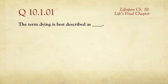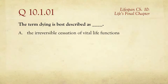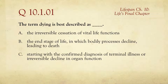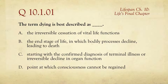The first question in this quiz is: the term 'dying' is best described as what? You get four choices, pick one. The irreversible cessation of vital life functions; the end stage of life in which bodily processes decline leading to death; starting with the confirmed diagnosis of terminal illness or irreversible decline in organ function; or the point at which consciousness cannot be regained.